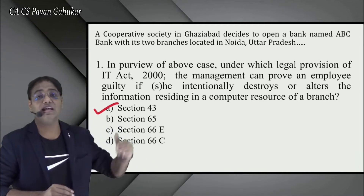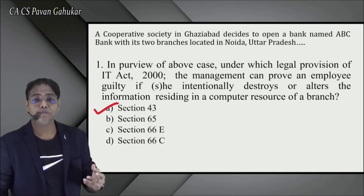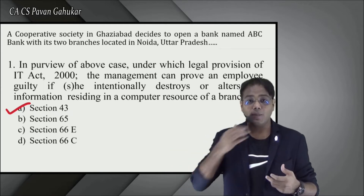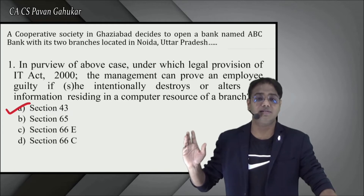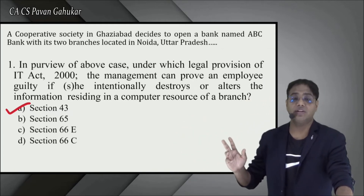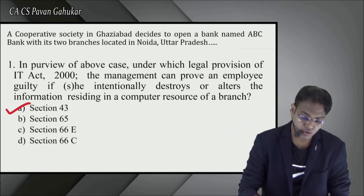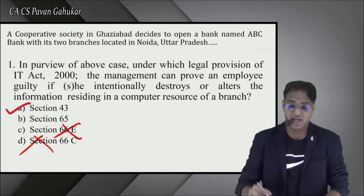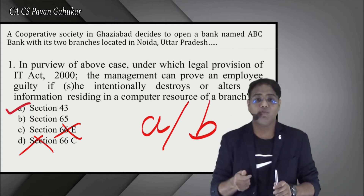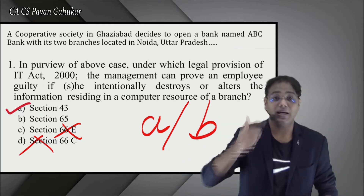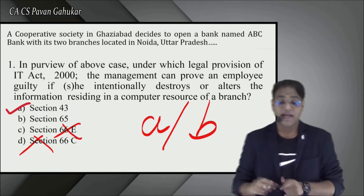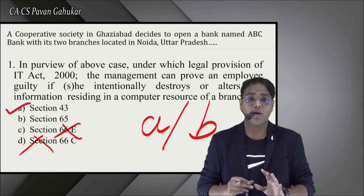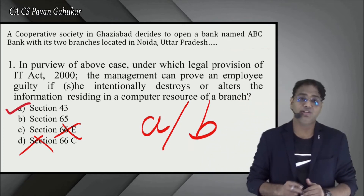If Section 43 doesn't come directly to mind and you're confused between 65 and 43, use the elimination method. Since 66E is privacy and 66C is identity theft, neither is relevant here — eliminate those two. Now you're left with options A or B. Even if you need to guess, at least narrow it down. First eliminate options you're sure are wrong, then apply your knowledge to choose between the remaining options. This is called the elimination method.